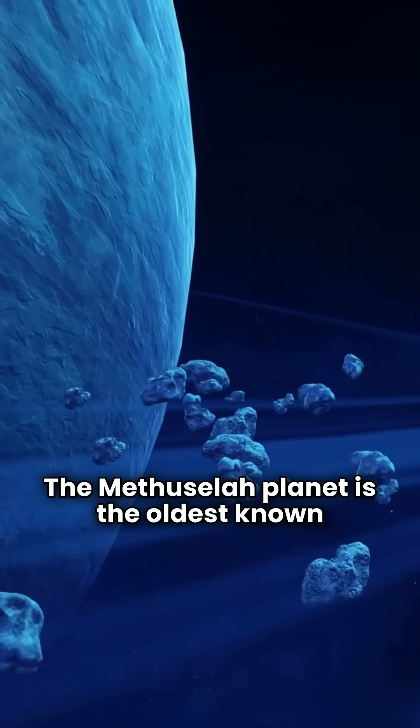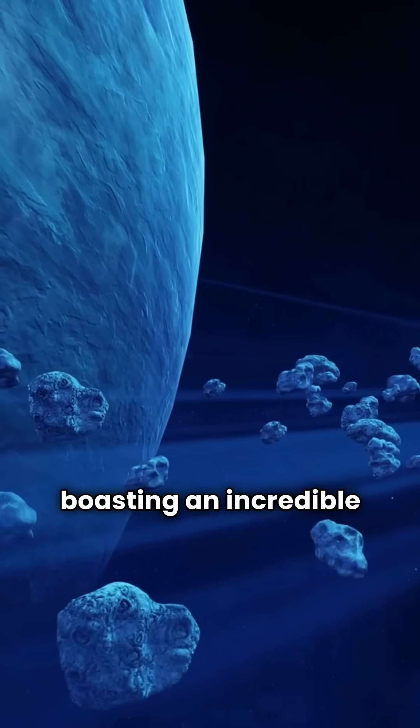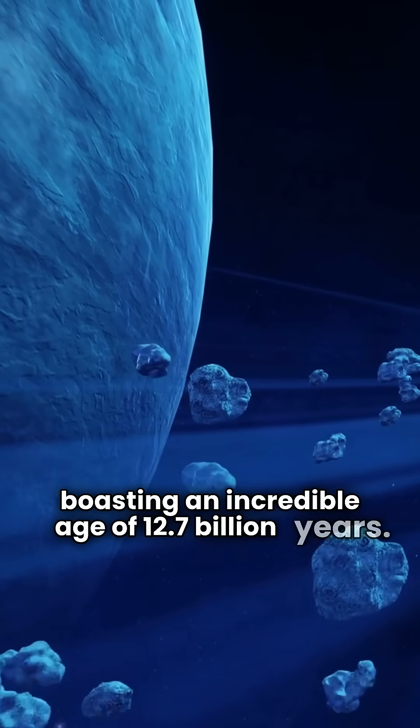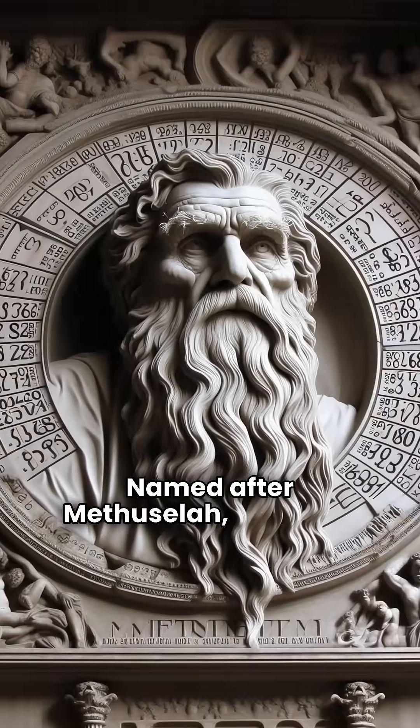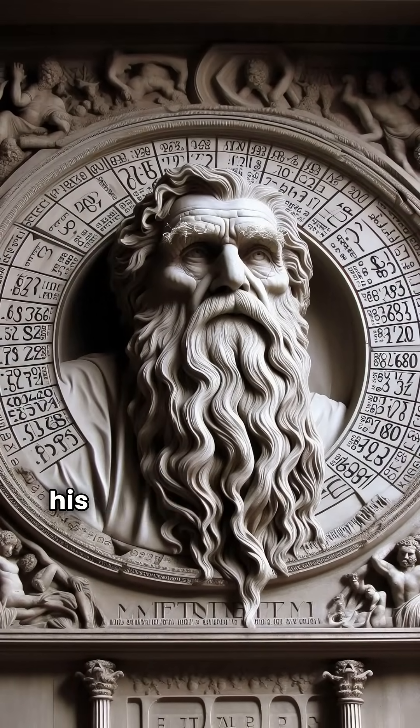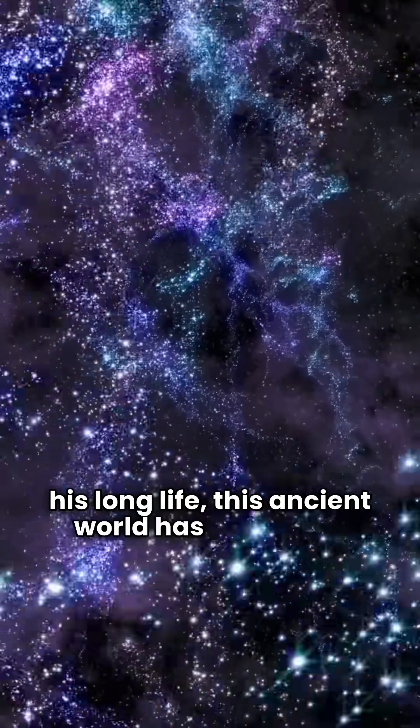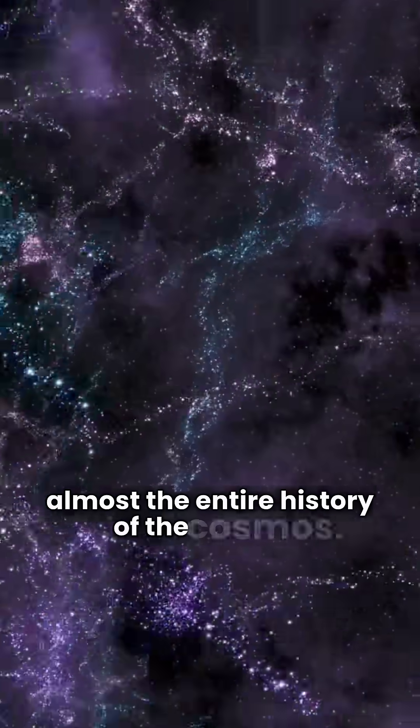The Methuselah planet is the oldest known exoplanet, boasting an incredible age of 12.7 billion years. Named after Methuselah, a biblical figure renowned for his long life, this ancient world has witnessed almost the entire history of the cosmos.